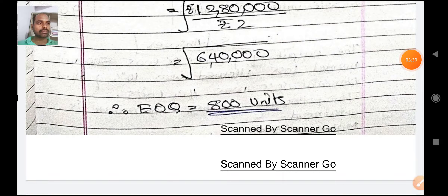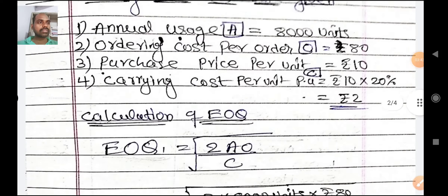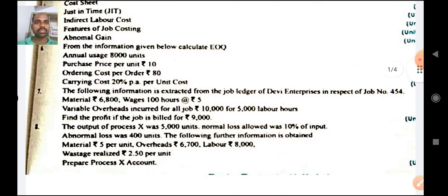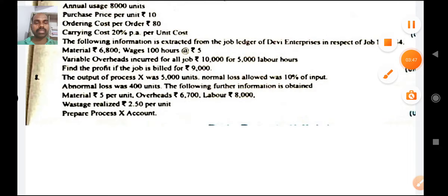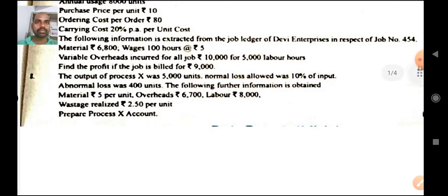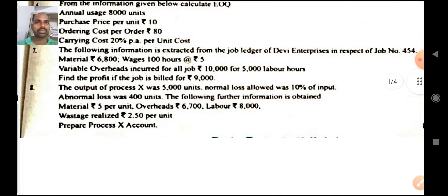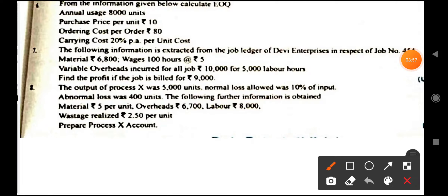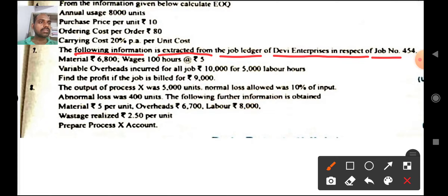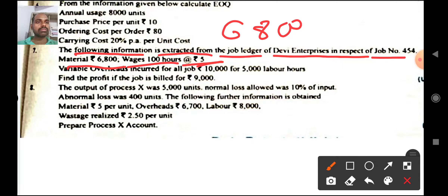Question number 6 is over. Let us see question number 7 — this is also an easy one. The following information is extracted from the job ledger of Devi Enterprises for job number 454: material cost 6800 rupees, wages 100 hours at 8.5 rupees per hour.